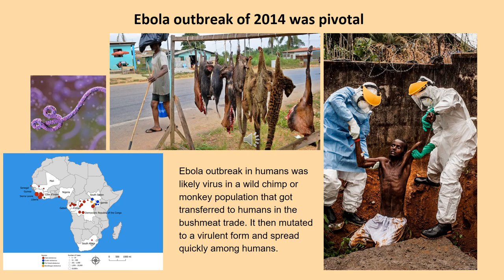The Ebola outbreak — that particular disease that got into the human population in West Africa in 2014 — was a scary one because it got into the human population. It was likely a virus that was normal in wild chimps and those populations had it but it didn't affect them. But once it got transferred into humans, probably from humans eating the bushmeat of wild animals, it mutated into a form that caused a real disease in humans and spread very quickly.